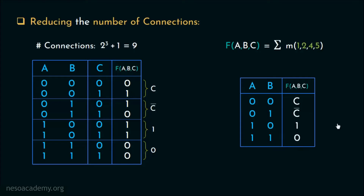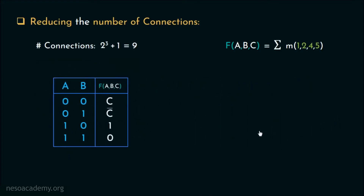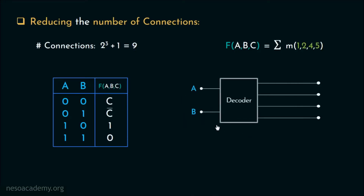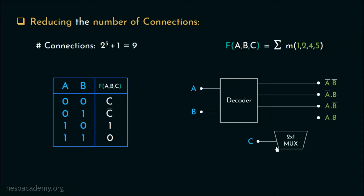This way of minimization is called Variable Entrant Map or VEM representation, and it helps us reduce the number of connections in the ROM matrix. The minimized truth table has only two input variables: for 00 the function produces C, for 01 it produces C̄, for 10 it produces 1, and for 11 it produces 0. Now we will need a 2-to-4 decoder where A and B are the input lines. For C, we will use a multiplexer and feed C through the select line, giving us C̄ and C as inputs to a 2-by-1 multiplexer.